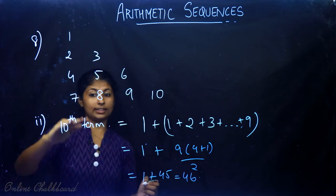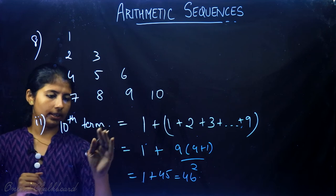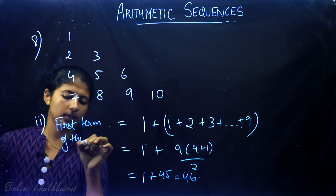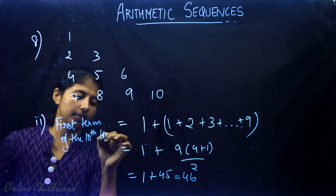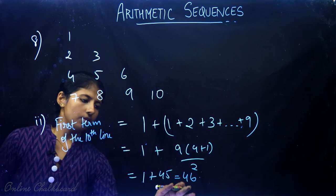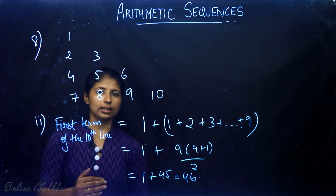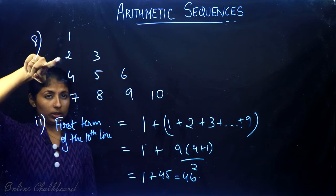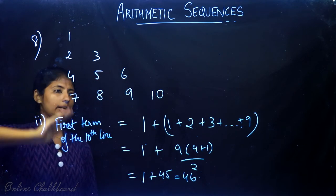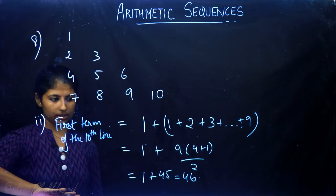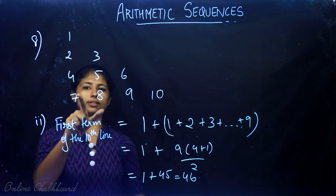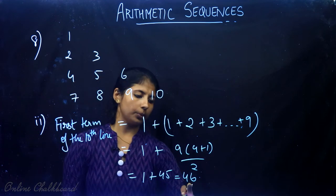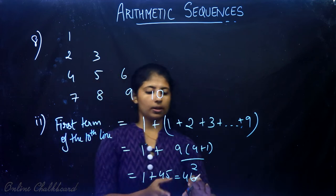So the first term of the tenth line is 46. Each line has as many terms as its line number, so the tenth line has 10 terms with a common difference of 1.